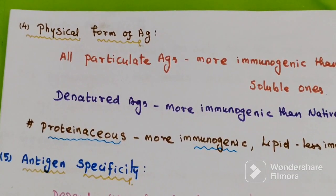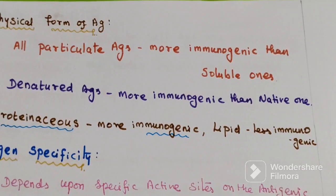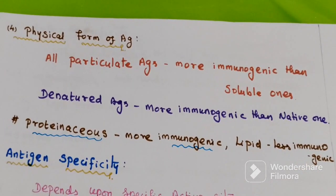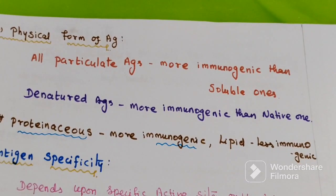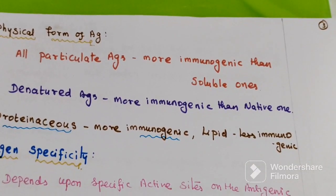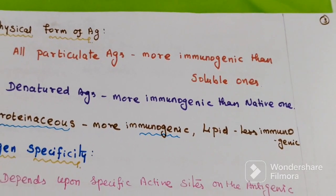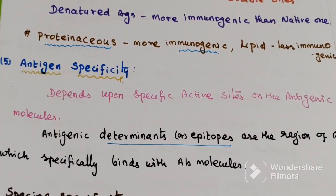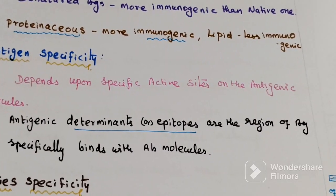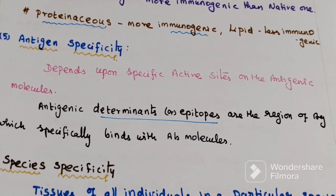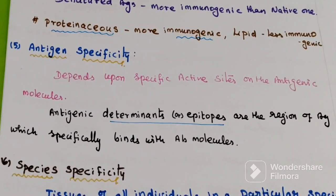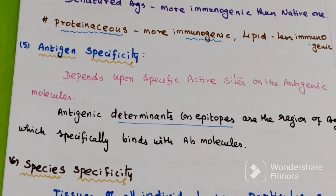The fourth factor is physical form of antigen. Particulate antigens are more immunogenic than soluble ones. Denatured antigens are more immunogenic than native ones. The fifth factor is antigen specificity. It depends upon the specific active site on the antigenic molecule — one antigen has a specific epitope which binds with the immunoglobulin. Antigenic determinants or epitopes are the regions of antigen which specifically bind with antibody molecules.